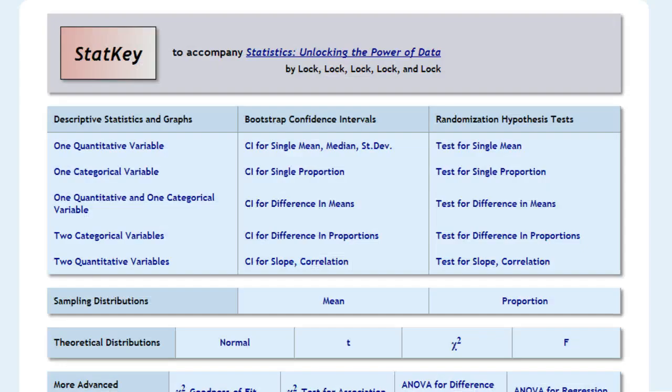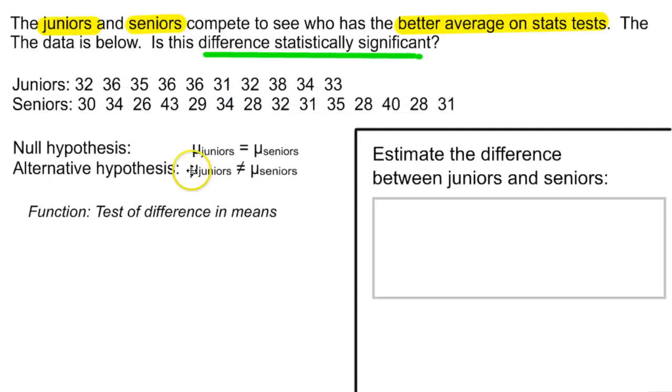So, we're looking at randomization tests. We have tests in the difference of means. And that's because we have one categorical, juniors or seniors, and one quantitative variable that we are measuring. The quantitative one being the average, or the score on the state test.